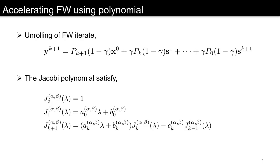Now, through our analysis, we were able to see that the Jacobi polynomial can help in accelerating or obtaining the optimal iterates. The Jacobi polynomial satisfies the recursion: J₀(λ) = 1, J₁(λ) = a₀λ + b₀.